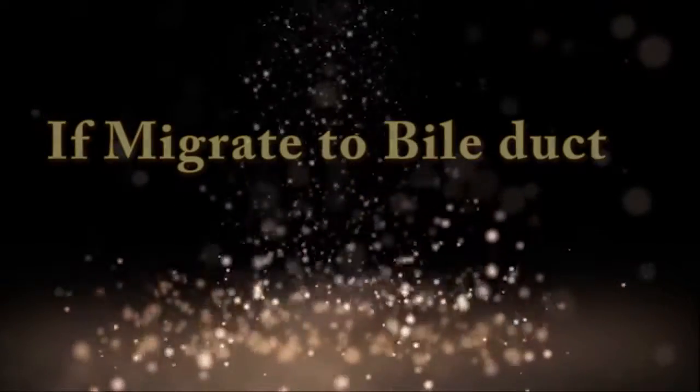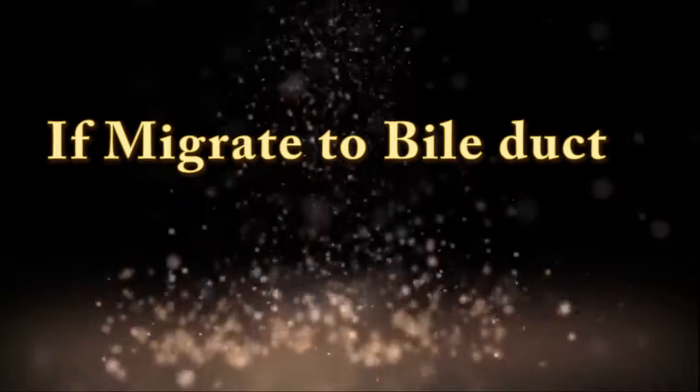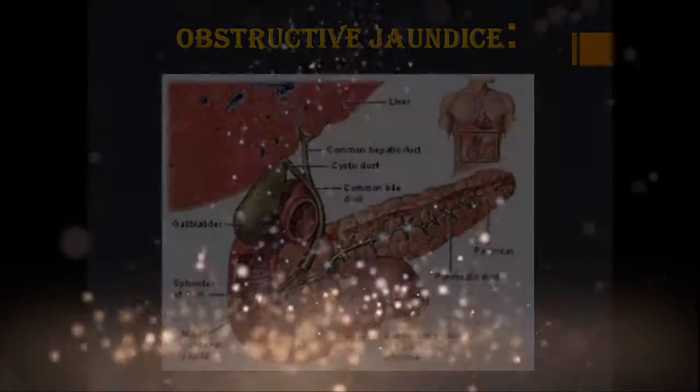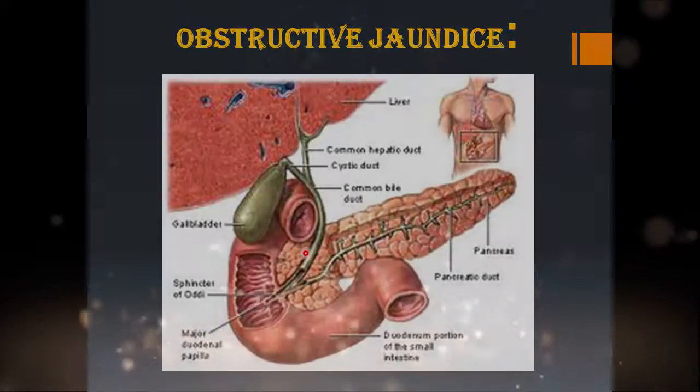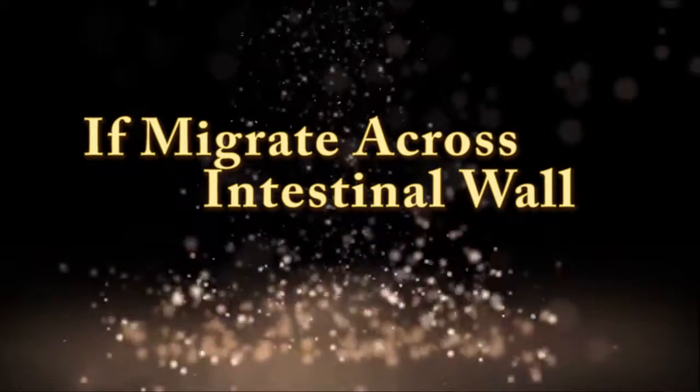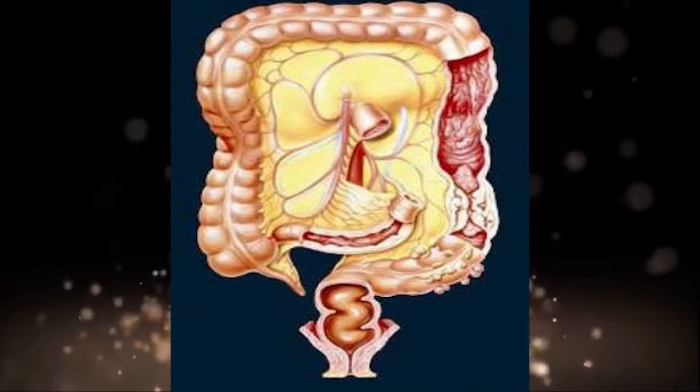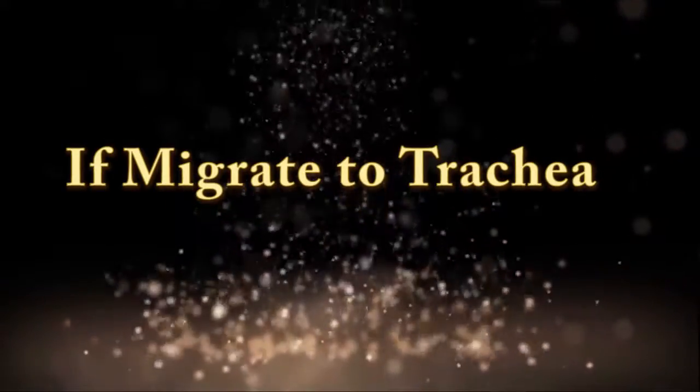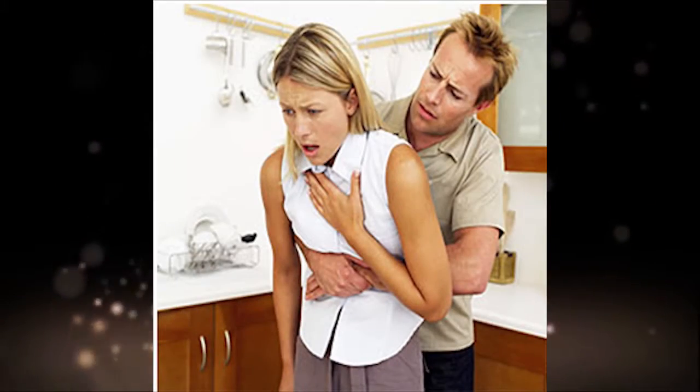Pathology due to wandering adults outside the intestine: If they migrate to the bile duct, obstructive jaundice and impaired fat metabolism occur. If they migrate across the intestinal wall, peritonitis happens. If they migrate and enter the trachea, suffocation can happen.